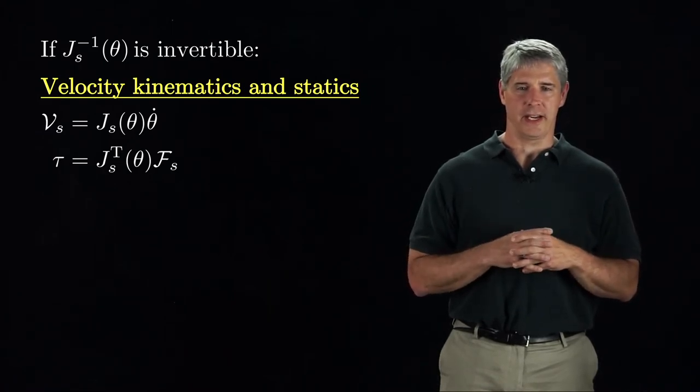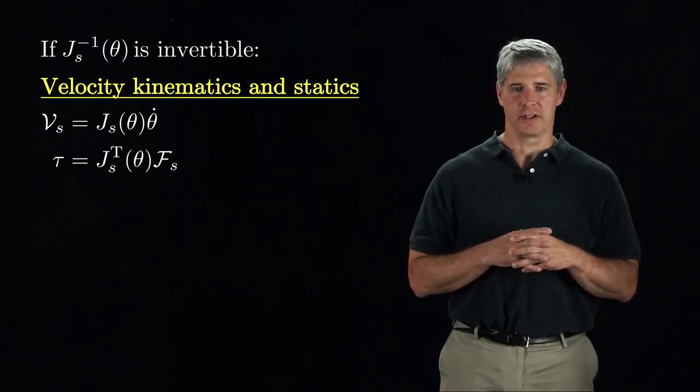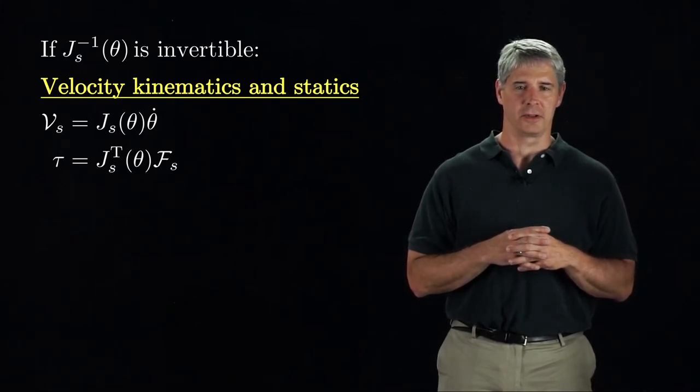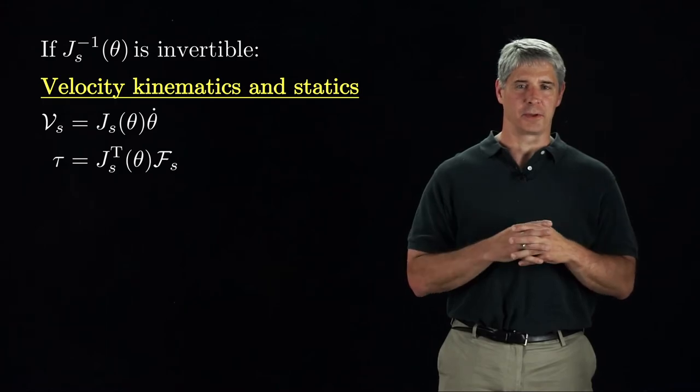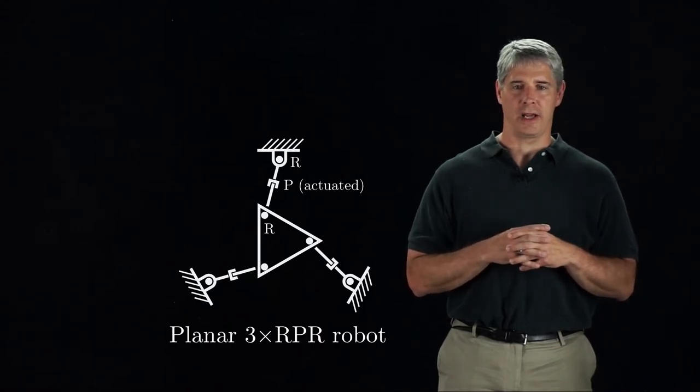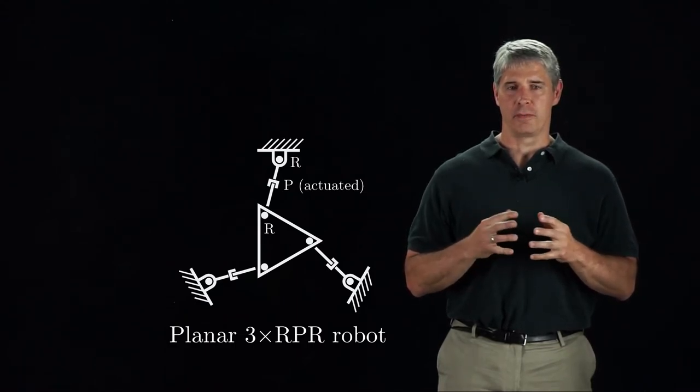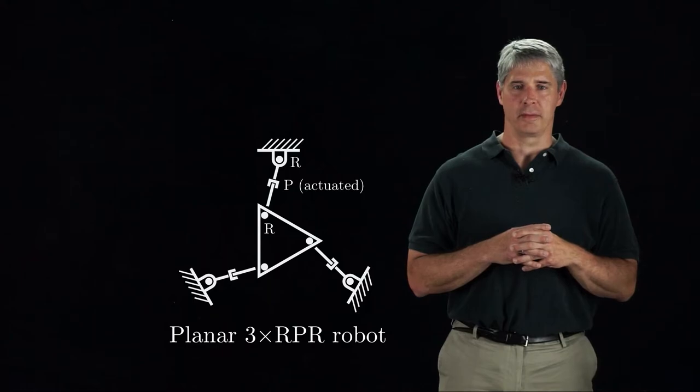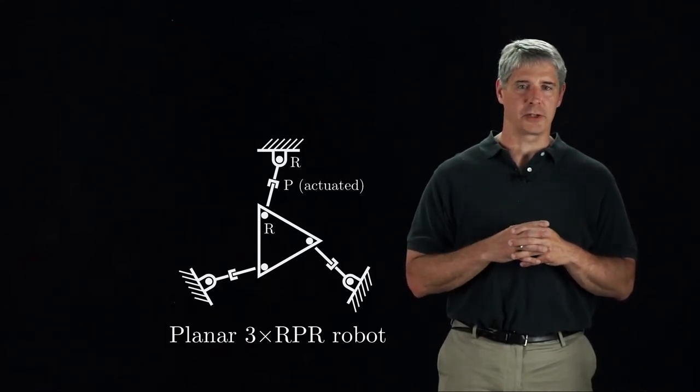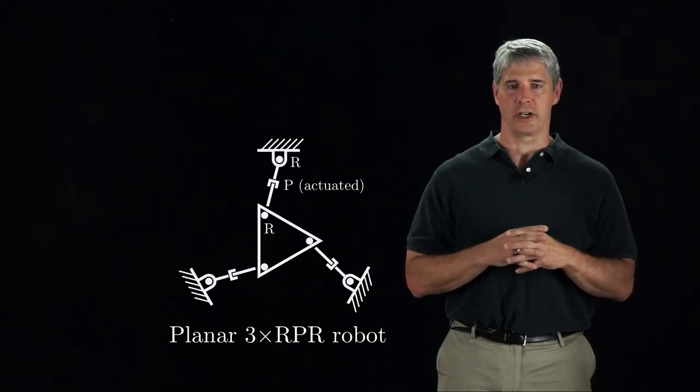One of the difficulties of analyzing closed-chain robots, however, is understanding all the possible singularities where the Jacobian is not invertible. Let's consider a simpler robot, the 3 by RPR parallel mechanism, which is the planar analog of the Stewart platform. The platform moves in all three planar degrees of freedom and is driven by three legs. Each leg has two unactuated revolute joints and one actuated prismatic joint.